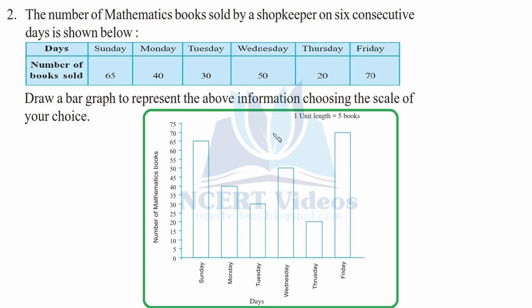On Friday, the maximum sales are 70 books. This is how you draw your bar graph, and that was your question two.